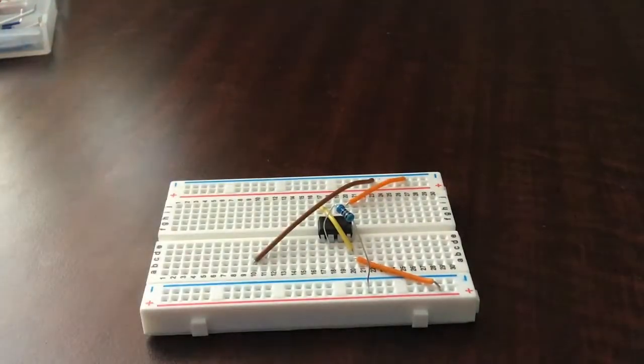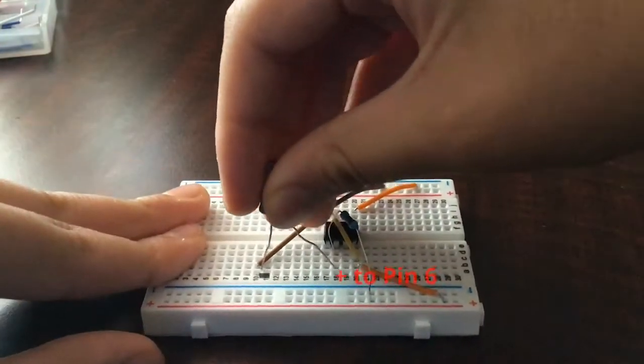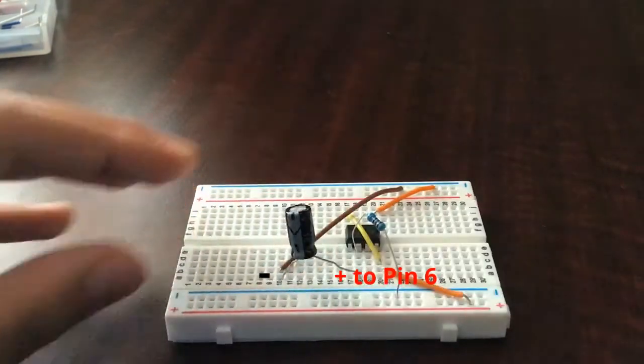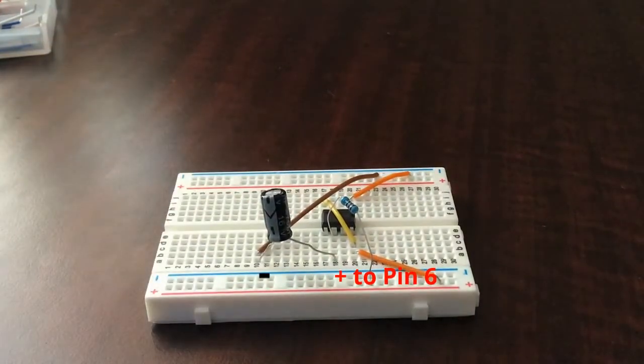Extend the negative rail of the breadboard and connect a 470 microfarad capacitor with the extended row of the breadboard and pin 6 of the IC.